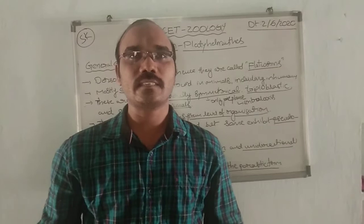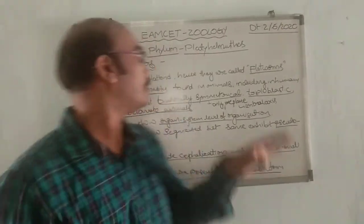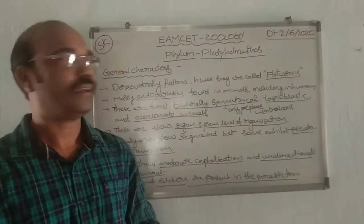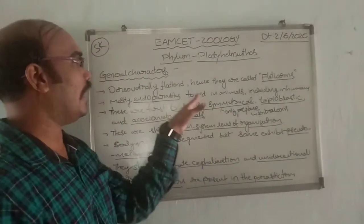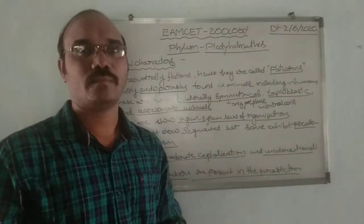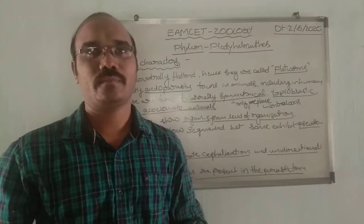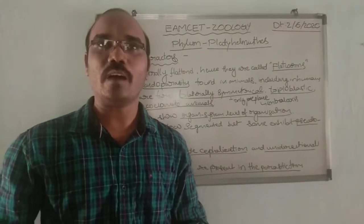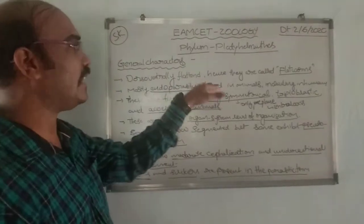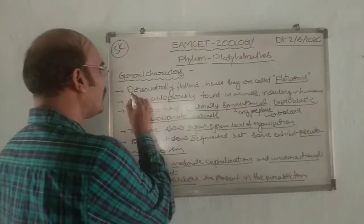And today, we are discussing the MZ Jowalaji class, Phylum Platyhelminthes. Why is this phylum named as Platyhelminthes? Because the worms are flattened in nature — these worms are dorso-ventrally flattened.